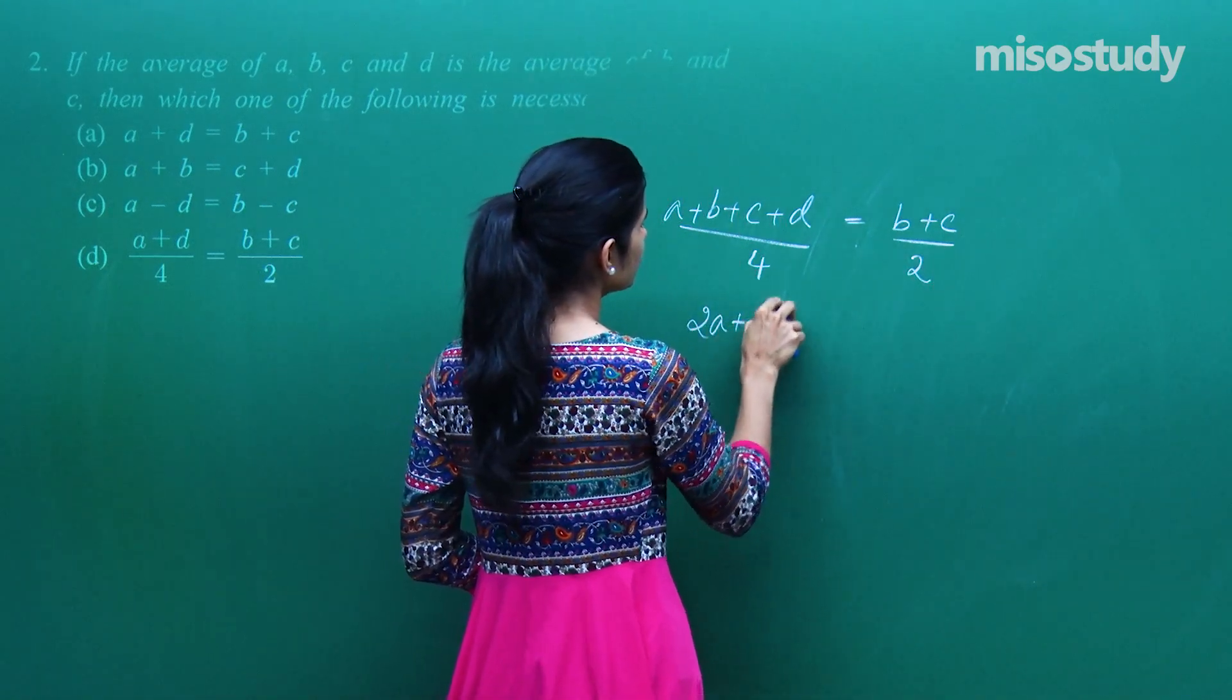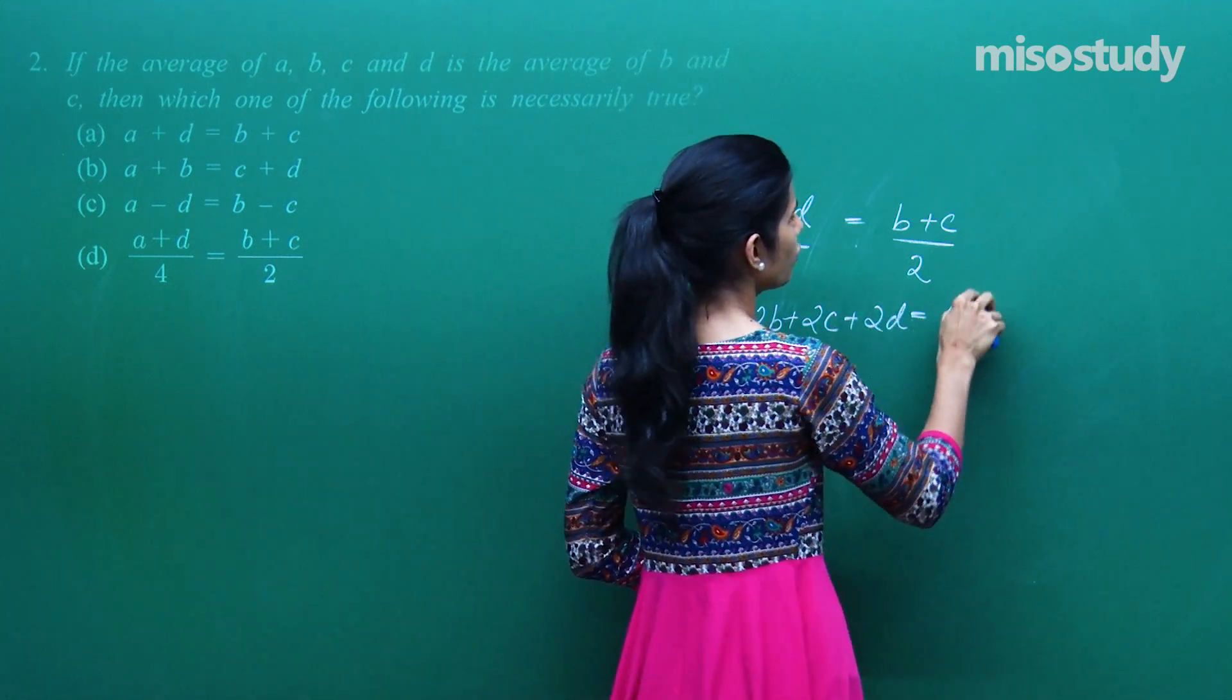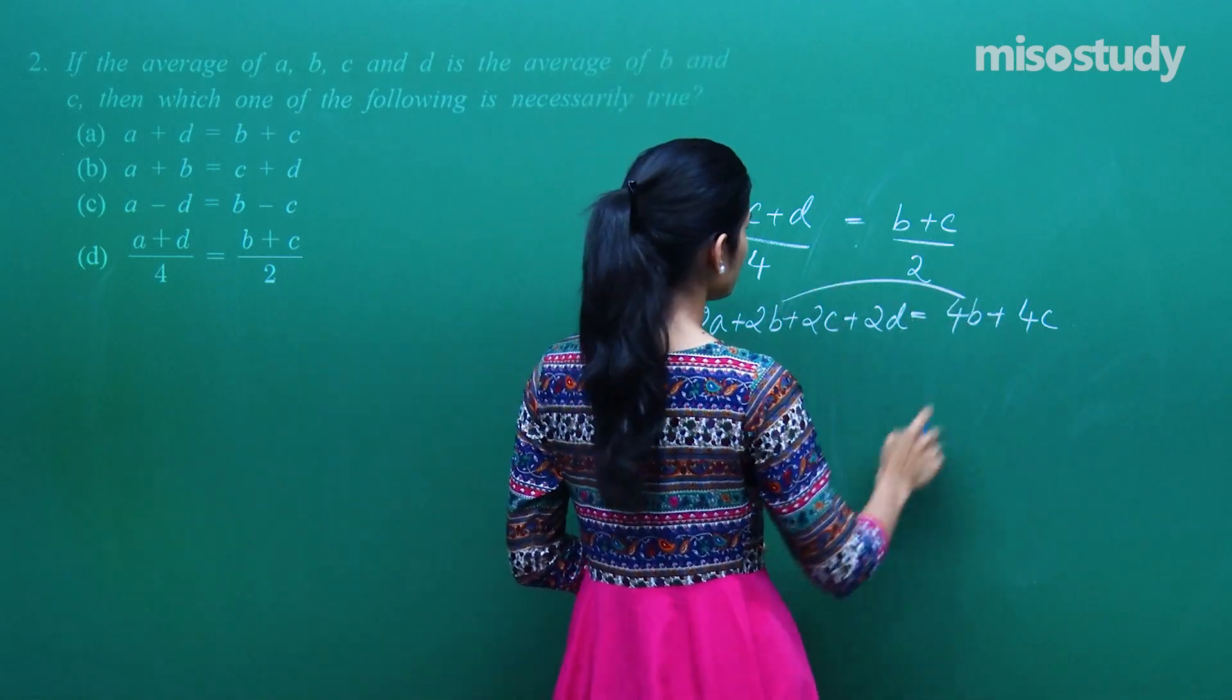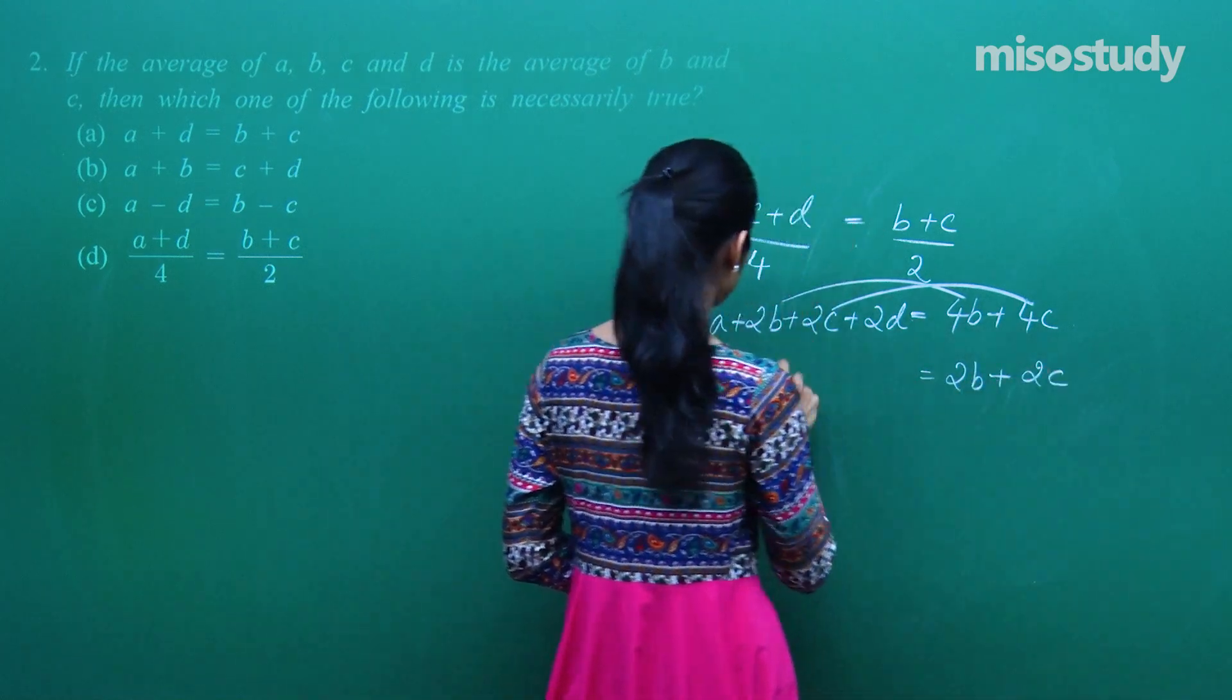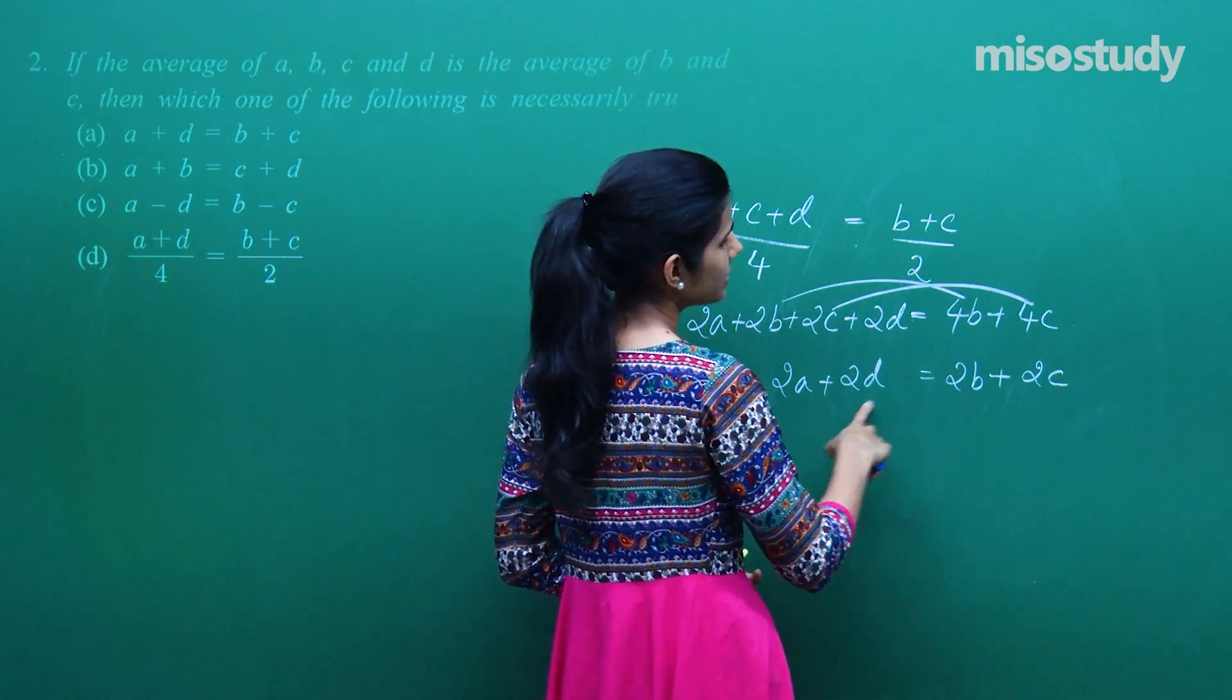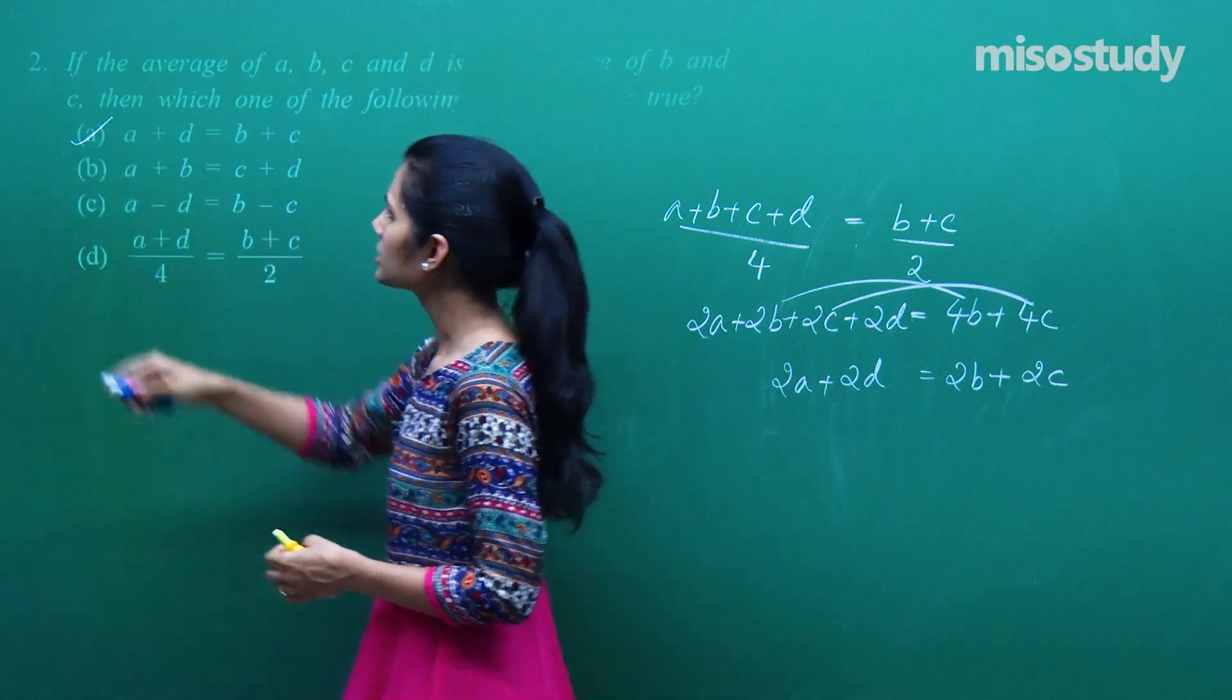So 2A plus 2B plus 2C plus 2D is 4B plus 4C. 4B minus 2B and 4C minus 2C. So you get 2B, 2C and here you have 2A plus 2D. So twice of A plus D is twice of B plus C. You get A plus D is equal to B plus C.